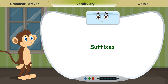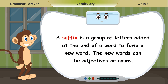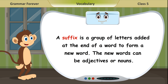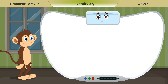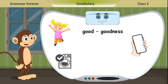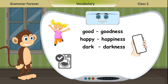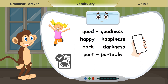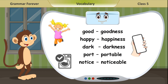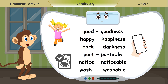Suffixes. A suffix is a group of letters added at the end of a word to form a new word. The new words can be adjectives or nouns. Examples: good — goodness; happy — happiness; dark — darkness; port — portable; notice — noticeable; wash — washable.